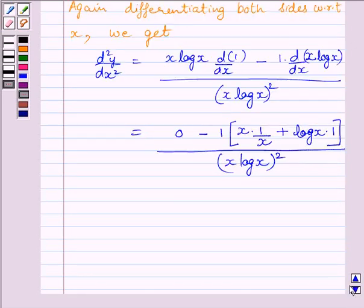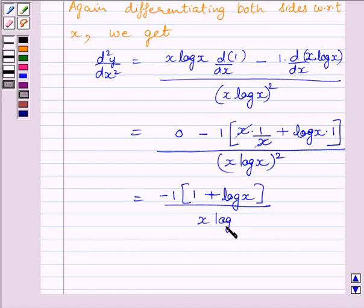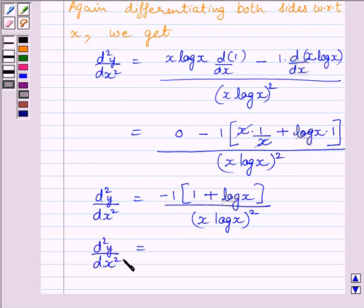Now this simplifies further. x and x will get cancelled. It is equal to minus 1 multiplied by 1 plus log x. So we can write d²y/dx² is equal to minus (1 plus log x) upon x log x whole square.